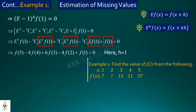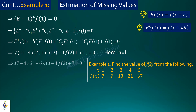Putting the values into the equation, we simplify and solve to find the missing entry f(2). This gives us the estimate for f(2). Note that in exam problems, there may be two missing values, and we need to set up two equations to estimate both simultaneously.